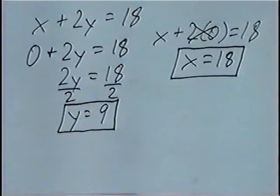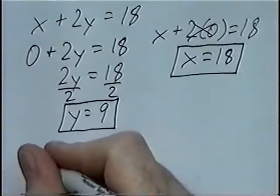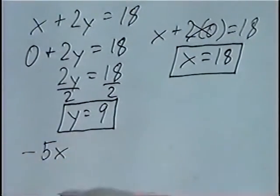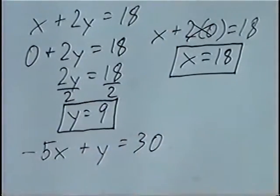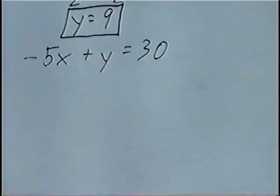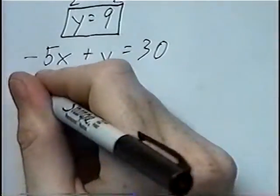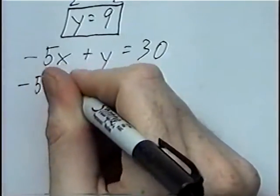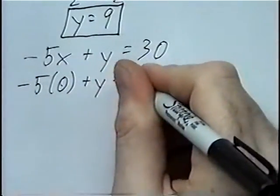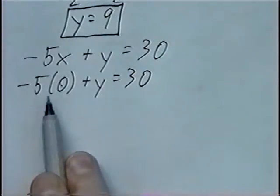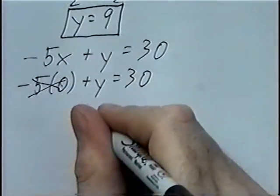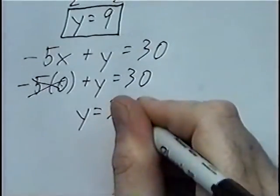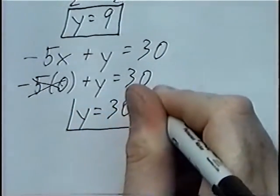The second and last question for this section: the equation is negative 5X plus Y equals 30. Again, plugging 0s in, we can put a 0 for X, which would be negative 5 times 0 plus Y equals 30. Negative 5 times 0 would be 0, and if we add Y to that, it would just be Y. So Y equals 30 would be the Y intercept.